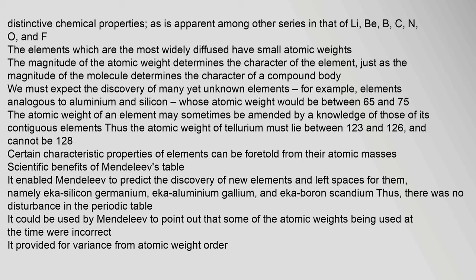We must expect the discovery of many yet unknown elements — for example, elements analogous to aluminium and silicon whose atomic weight would be between 65 and 75. The atomic weight of tellurium must lie between 123 and 126, and cannot be 128. Mendeleev's table enabled him to predict the discovery of new elements and left spaces for them, namely eka-silicon (germanium), eka-aluminium (gallium), and eka-boron (scandium). It could also be used to point out that some atomic weights being used at the time were incorrect.